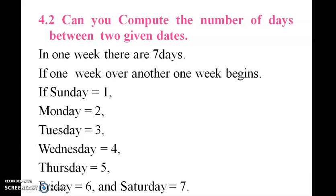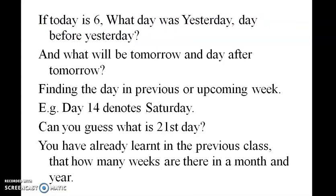One week is seven days. Sunday is day one, Monday is day two, Tuesday is day three, Wednesday is day four, Thursday is day five, Friday is day six, Saturday is day seven. Today is the sixth day — so what day was yesterday? And the day before yesterday?